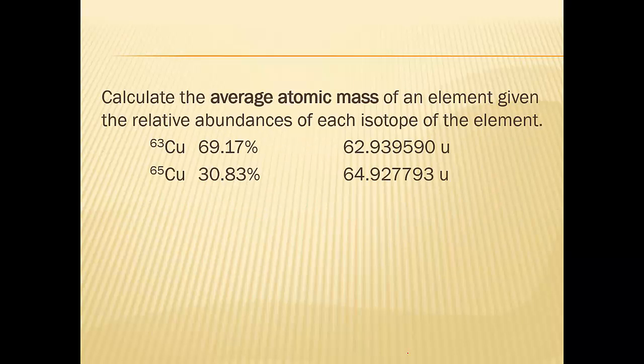Look at what I have. This is your first problem. I have copper-63, 69.17%. Notice this mass, 62.939, you round this up. What does it round up to? 63. So that's how I know this is the mass of the copper-63 isotope. U means the same as AMU. Then I have copper-65, 64.9. 70% of 63, so I expect my answer to be closer to my copper-63.